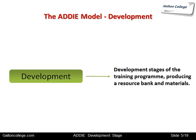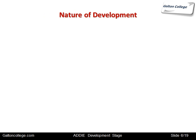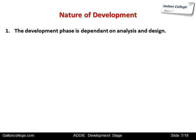Training programs happen for a reason and have been designed to achieve the desired outcomes; they must now be developed. The development stage looks at the resources that are going to be used and how the program is going to be developed overall. The development phase is dependent on analysis and design, so it must come at part three.